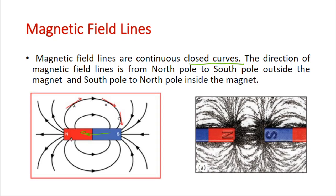As shown in the figure, outside the magnet the field lines move from north to south, while inside they go from south pole to north pole. In a practical demonstration, if you have two magnets and sprinkle small iron pieces, they will create patterns that show the magnetic field lines.